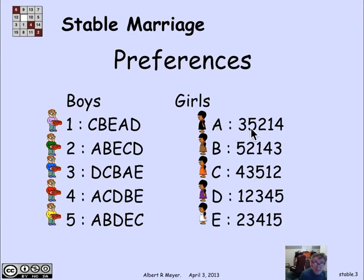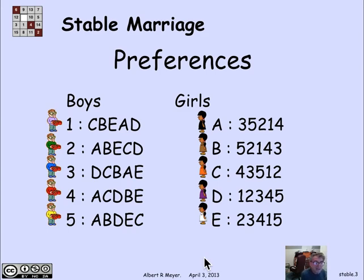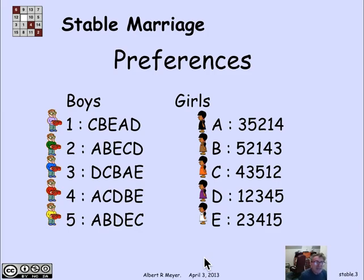For example, girl A likes boy three best and boy five second best, and boy one likes girl C best and girl D least. So the problem is that we want to get all the boys married to all the girls — five monogamous bisexual marriages — and we'd like to acknowledge these preferences and satisfy as many as we can.